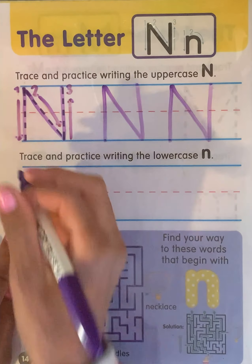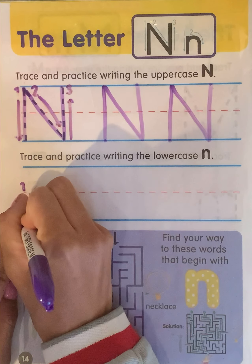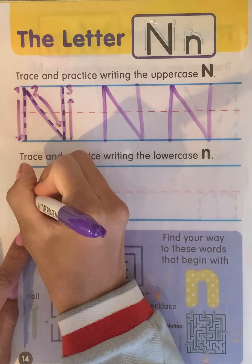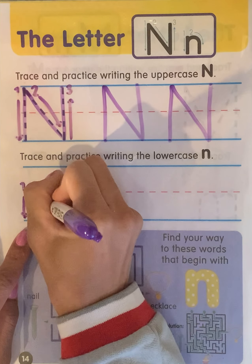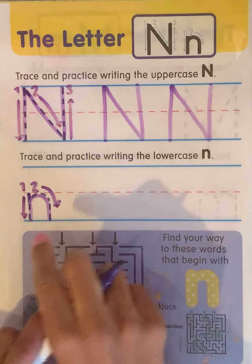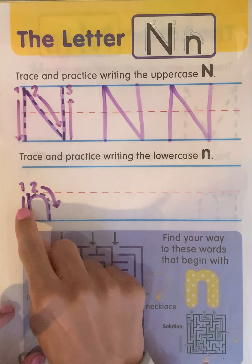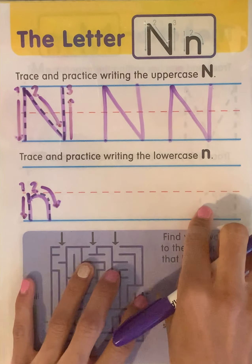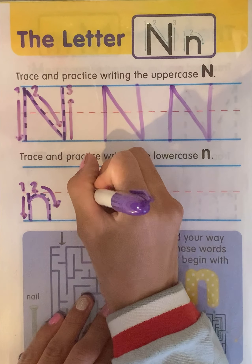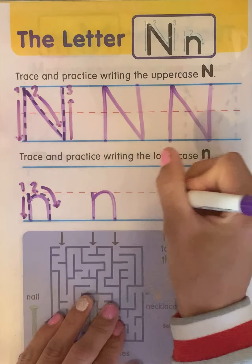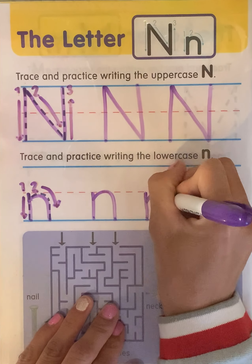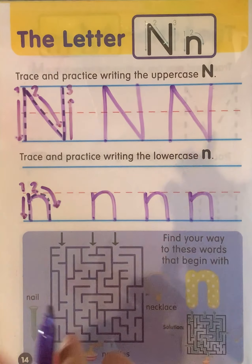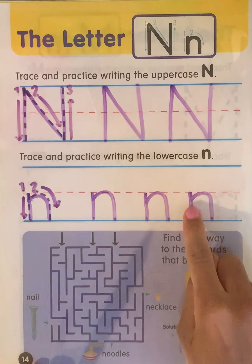Now we're going to do lowercase N. So again, we have numbers to help us trace the letter. That's lowercase N — now with your finger, let's go ahead and trace it together. Nicely done! So now we're going to practice a few times just writing our lowercase N. Let's practice one more time — go straight down and around.